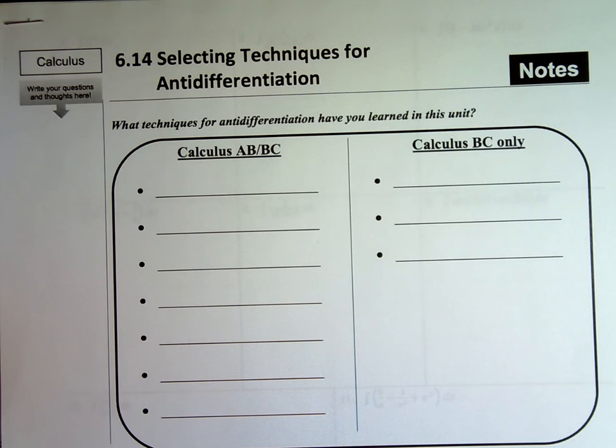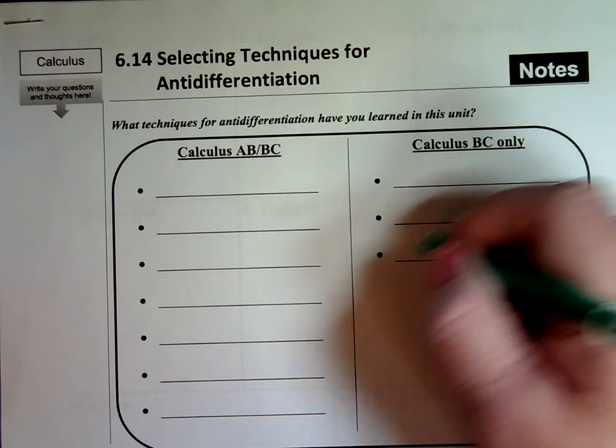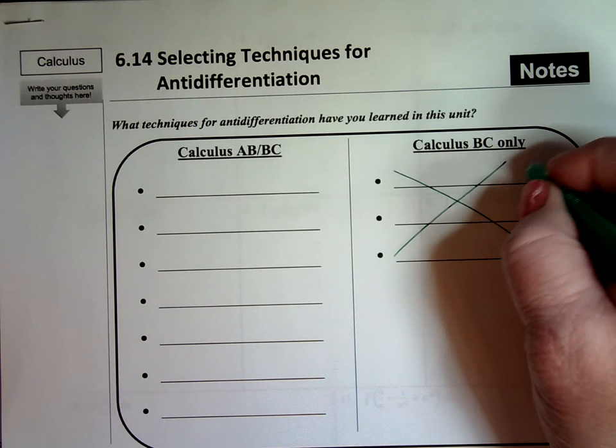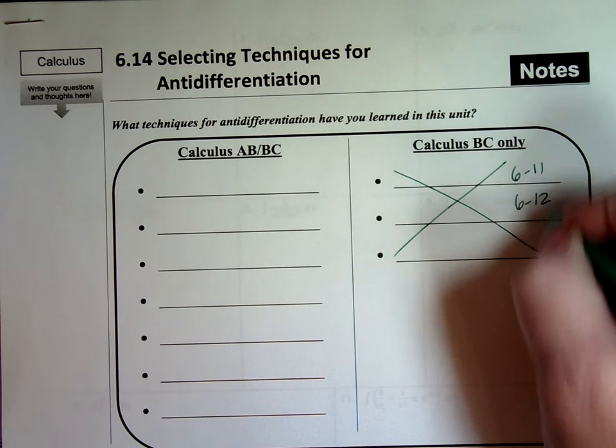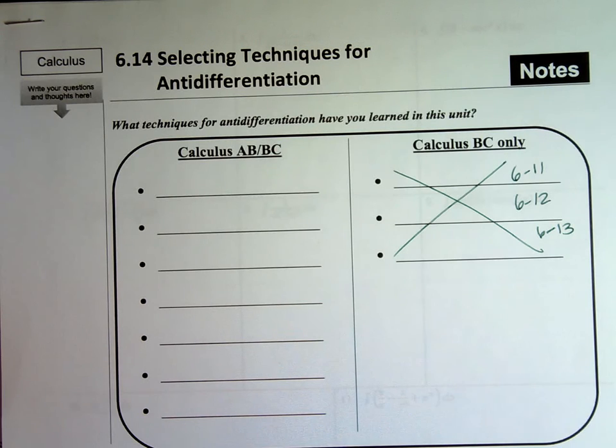All right, my friends, this is the last section of unit 14. It's section 6.14. You skipped sections 11, 12, and 13 because they are BC topics. You can see that there's three places here. This would have been sections 6.11, 6.12, and 6.13, but you don't need to know them until next year if you take BC.